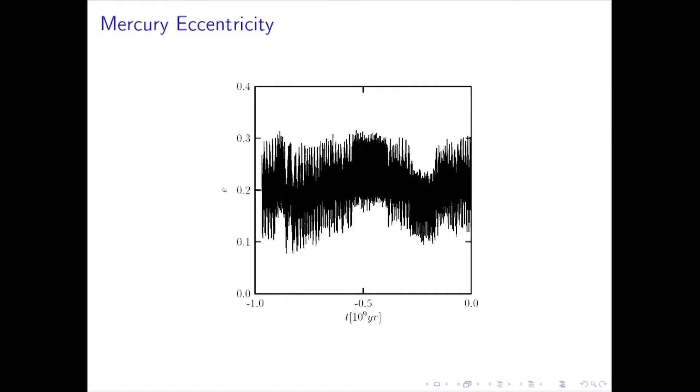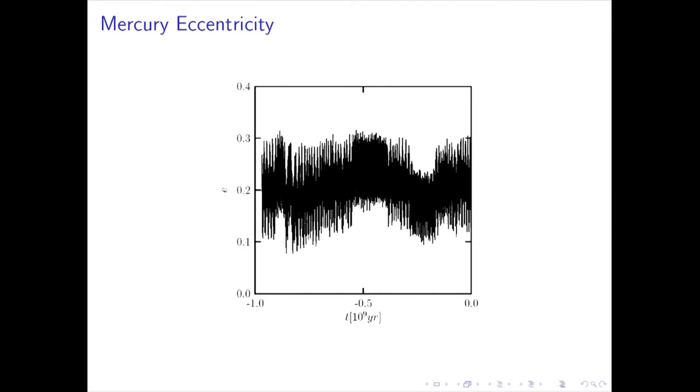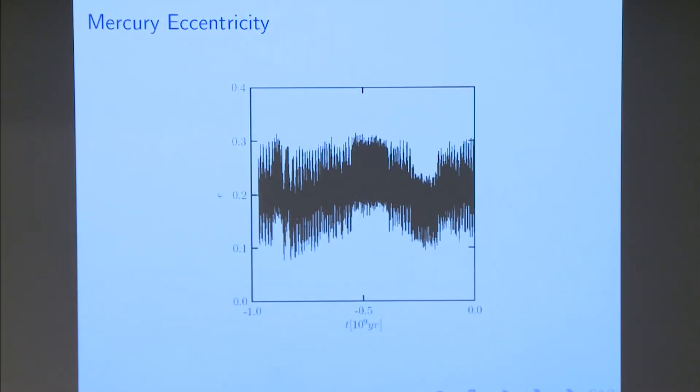Now, the most irregular part of the solar system seems to be in the eccentricity of Mercury. And so this is showing a numerical integration of Mercury over 1 billion years. And you can see that the eccentricity of the planet Mercury varies in this chaotic way.